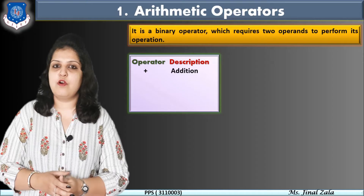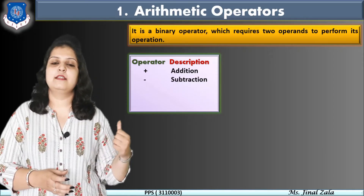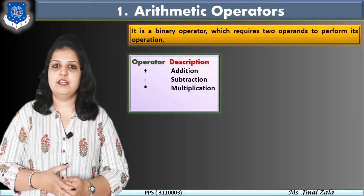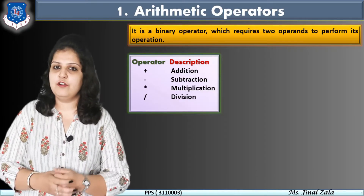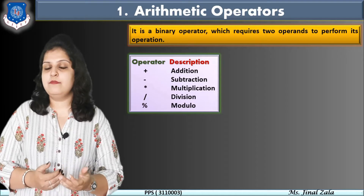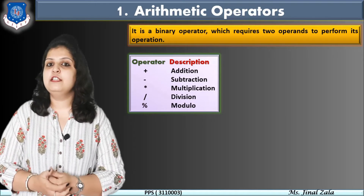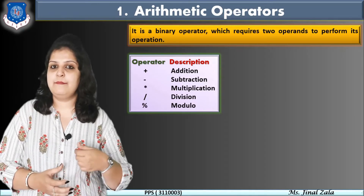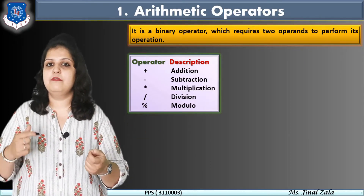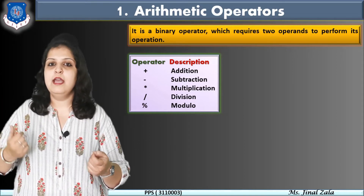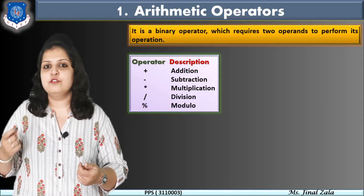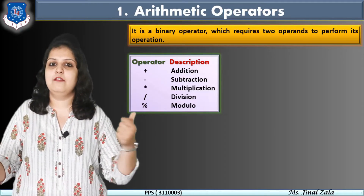Now let's see which operators are arithmetic operators. Plus is used for addition. Minus is used for subtraction. Star is used for multiplication. Slash is used for division of two numbers. And last is percentage, which is used for modulo. The modulo operator returns the remainder. Suppose a is equal to 10 and b is equal to 5. Then a divided by b equals 2, which is the quotient. And a modulo b gives 10 modulo 5, so the remainder is 0. So remember: division means quotient and modulo means remainder.